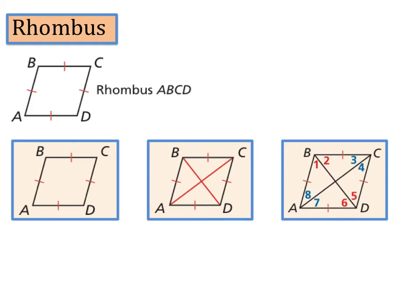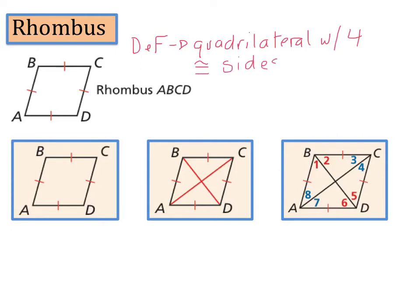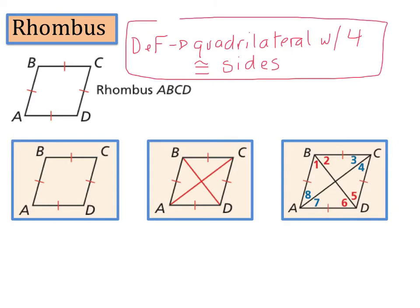The next type of quadrilateral we're going to talk about is a rhombus. The definition of a rhombus is a quadrilateral with four congruent sides.